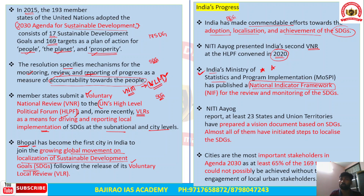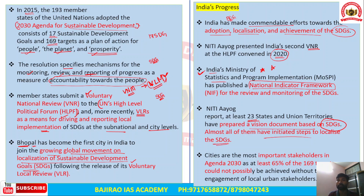According to NITI Aayog report, at least 23 states and union territories have prepared a vision document based on SDGs and their implementation. Almost all states that have come up with vision documents have initiated steps to localize SDGs, which is good news for India as we are acting at local, sub-national, and city levels — which will reflect at the national level.